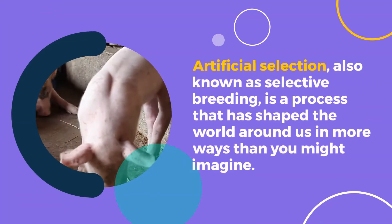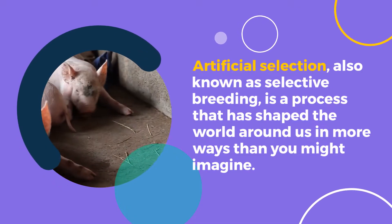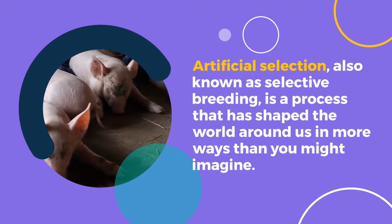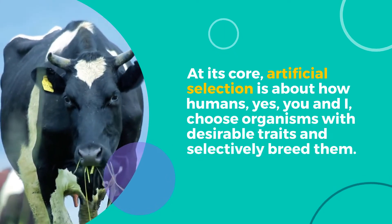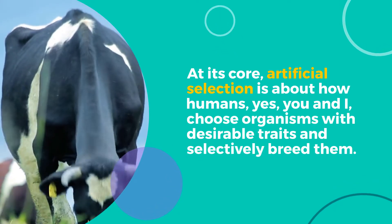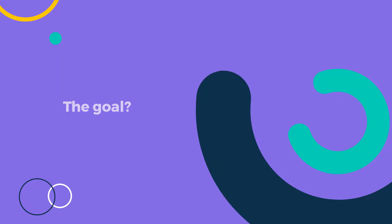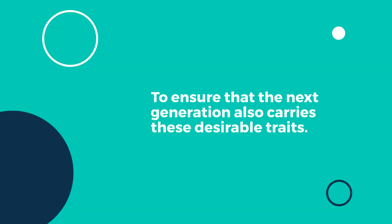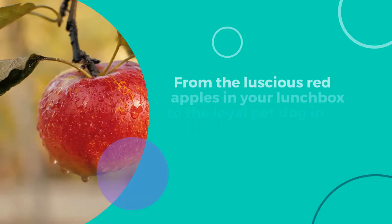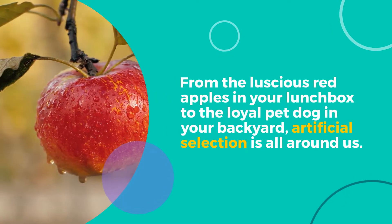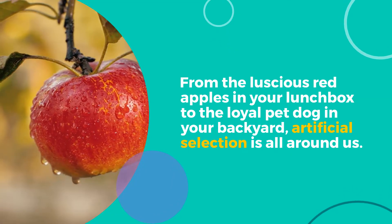Artificial selection, also known as selective breeding, is a process that has shaped the world around us in more ways than you might imagine. At its core, artificial selection is about how humans choose organisms with desirable traits and selectively breed them. The goal? To ensure that the next generation also carries these desirable traits. From the luscious red apples in your lunchbox to the loyal pet dog in your backyard, artificial selection is all around us.